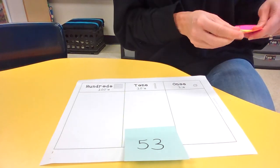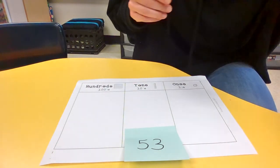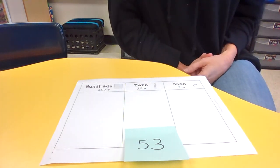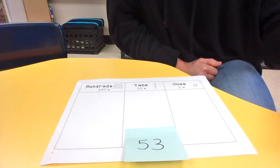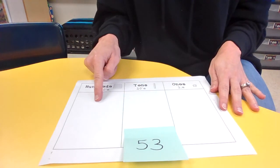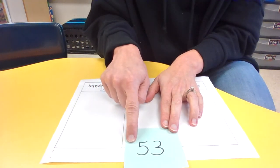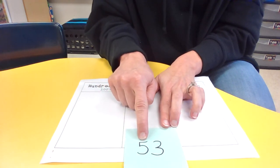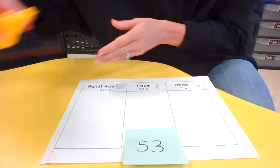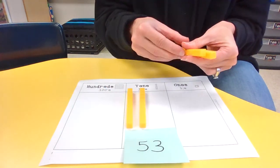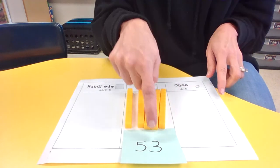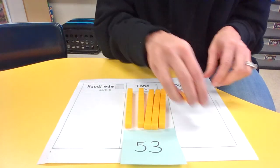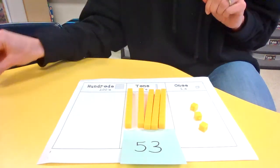All right, friends, are we going to have anything in the hundreds place? Nope, there's nothing there in the hundreds place. We need to start in the tens place. We have five. 1, 2, 3, 4, 5. We have a 3 in our ones place. 1, 2, 3 makes 53.